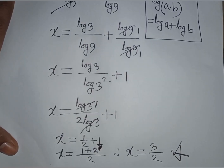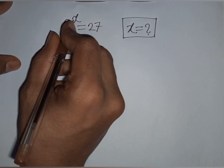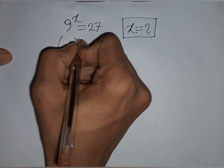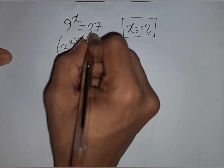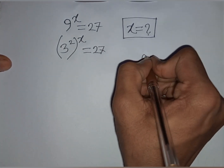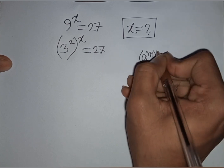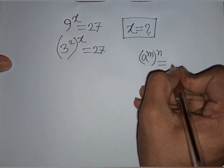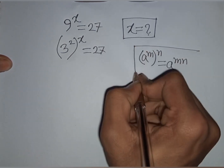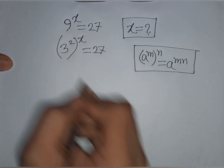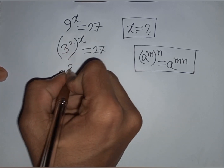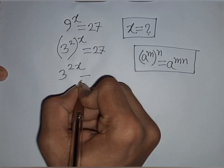Now we apply another method to solve this problem. We have 9 power x, which is the same as 3 power 2 in bracket, power x, is equal to 27. Here we apply the exponential rule: a power m, bracket power n, is equal to a power m times n. So 3 power 2, bracket power x, becomes 3 power 2x.